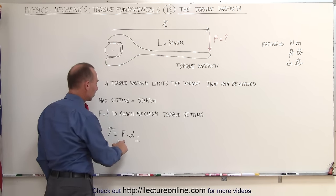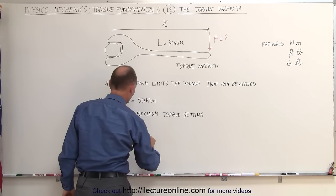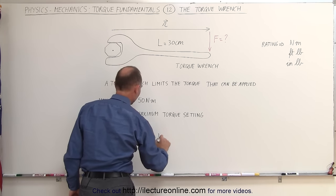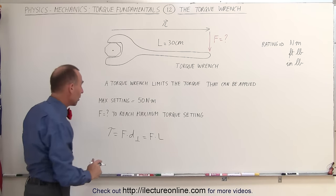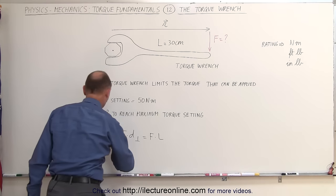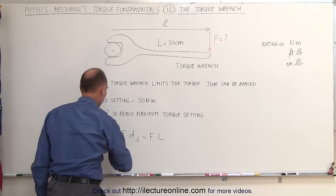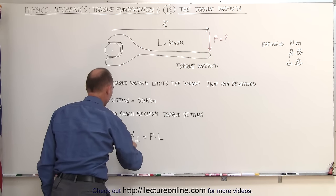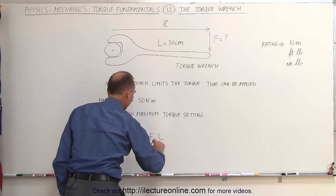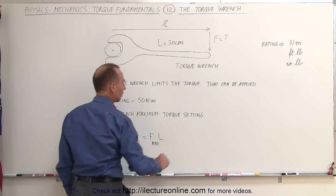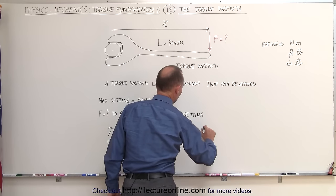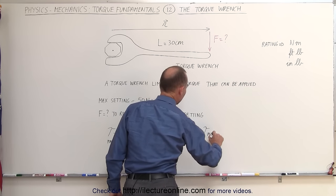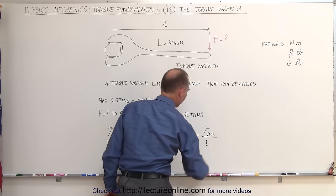So that means that the maximum torque can be found by multiplying the force applied times the length of the torque wrench, which means that if you want to find the maximum force, so this is the maximum torque, and if you want to get the maximum torque, we need to apply the maximum force. So the maximum force is therefore equal to the maximum torque divided by the length of the torque wrench.